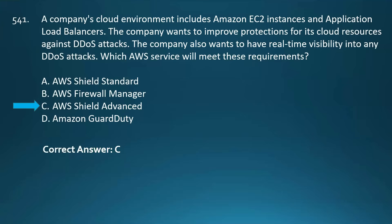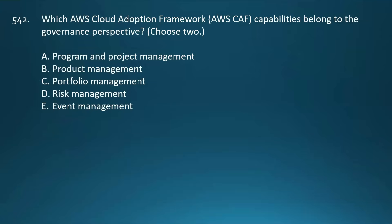Next question: Which AWS Cloud Adoption Framework capabilities belong to the governance perspective? You need to choose two options. Your options are Program and Project Management, Product Management, Portfolio Management, Risk Management, and Event Management.